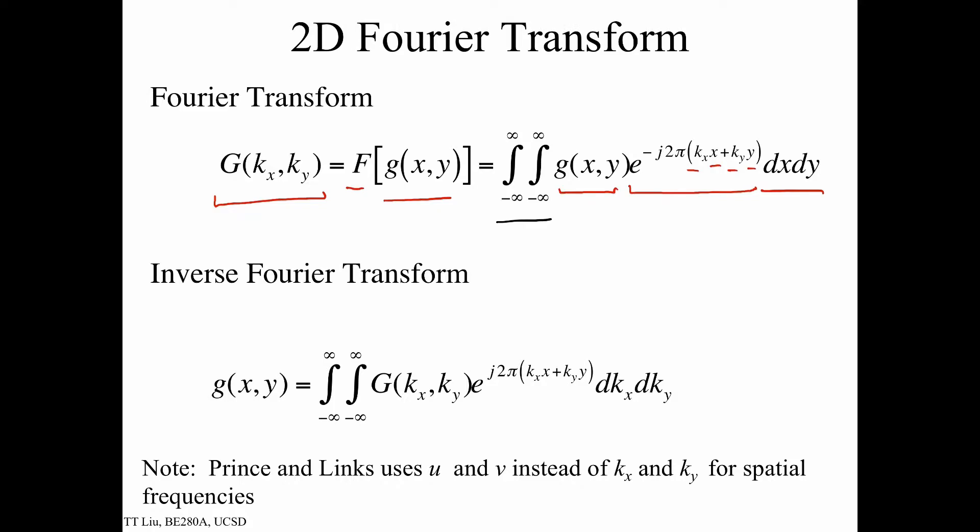As with the 1D Fourier transform, it's possible to take the inverse Fourier transform, in which case we take the Fourier transform G of kx, ky, we multiply it by a complex exponential that has a similar form as the complex exponential we used here, except now there's no minus sign there. We integrate over dkx, dky, and we get back our original function g(x,y).